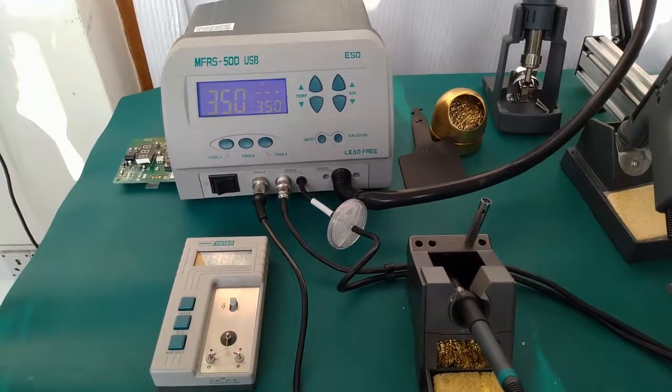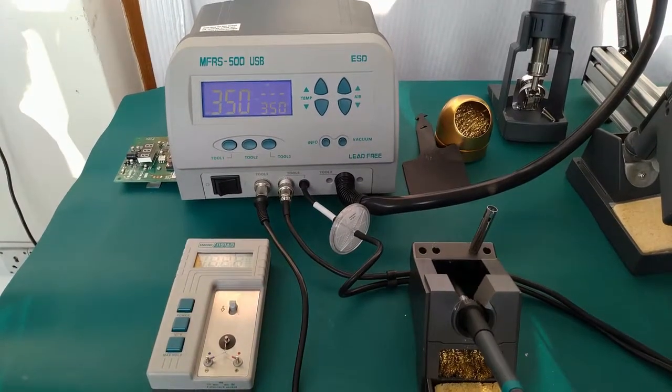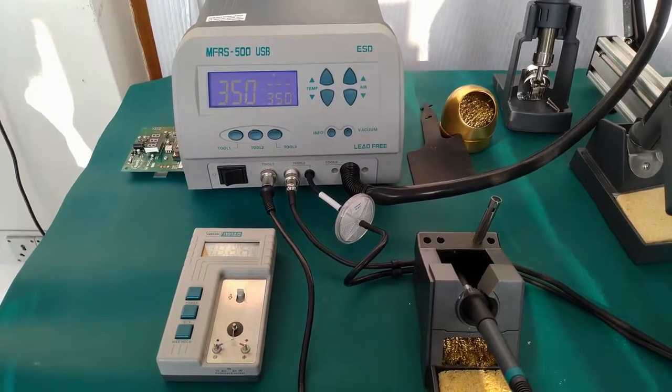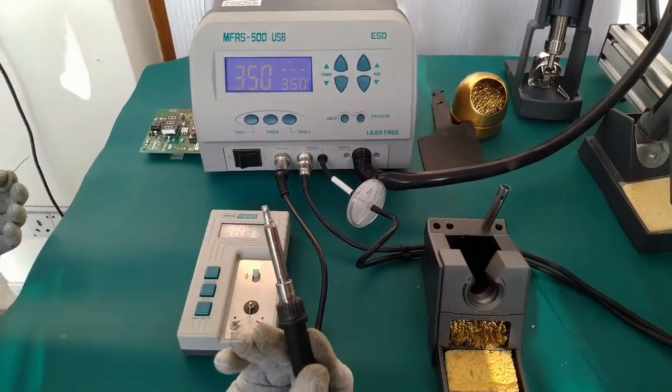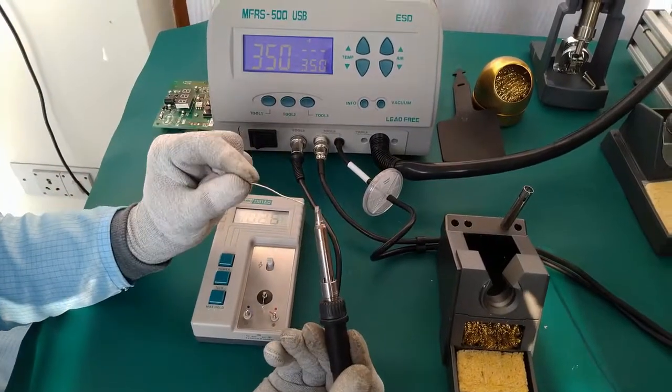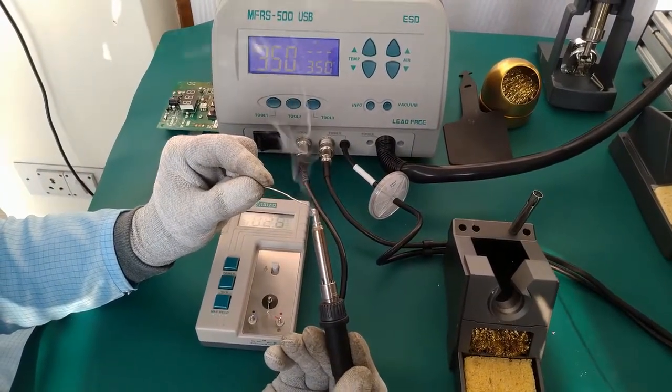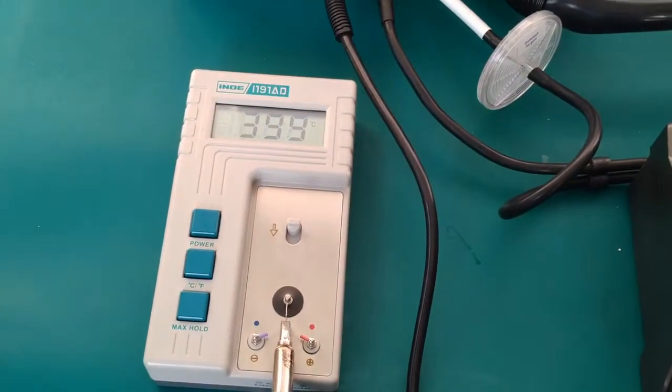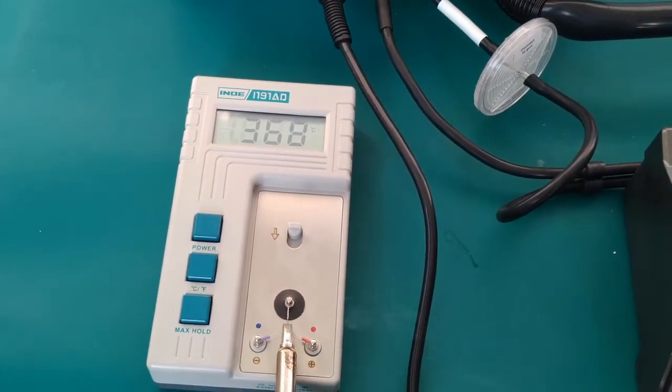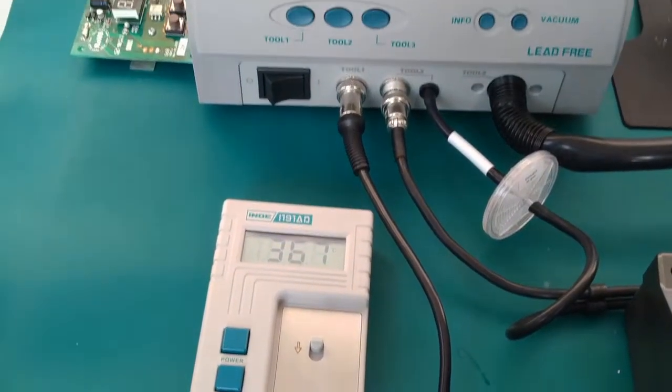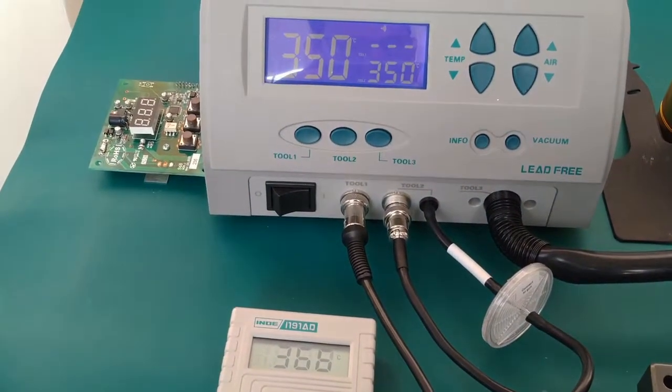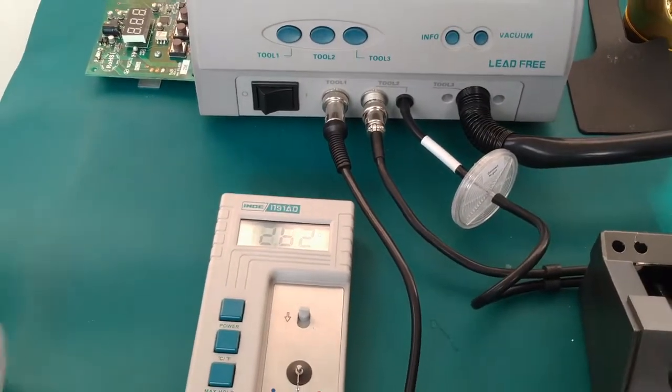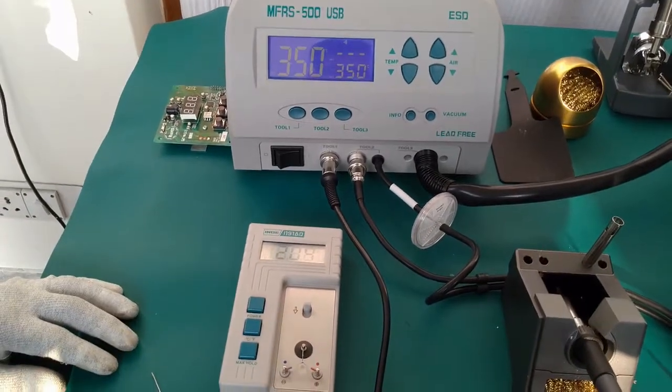Now we will explain the calibration feature of this rework system. We will measure the tip temperature of the soldering iron with the help of an external calibrator. We will apply some solder wire and measure the tip temperature. The set temperature is 350 degrees but the value observed on the thermometer is 367. We will input the value observed on the thermometer into this unit.